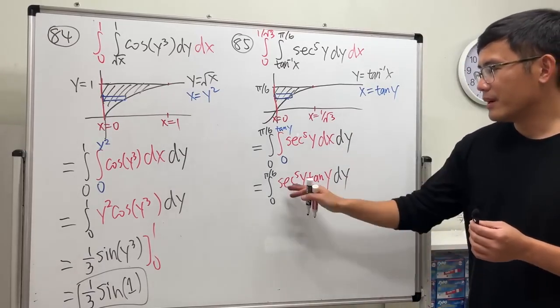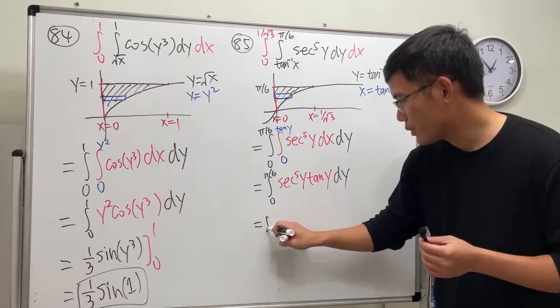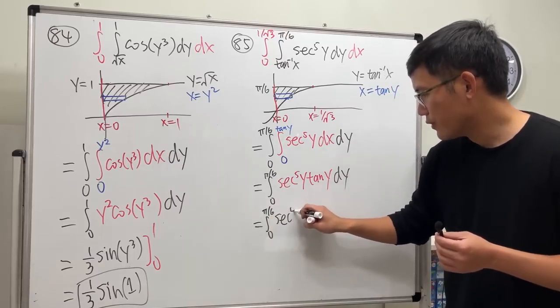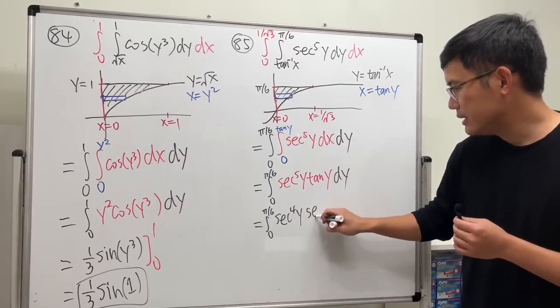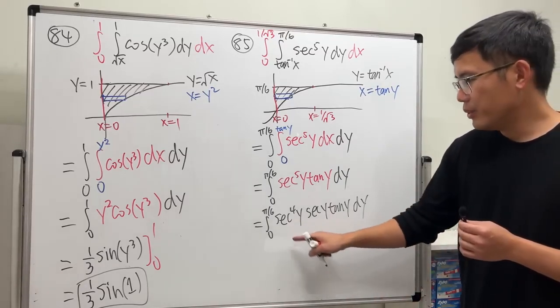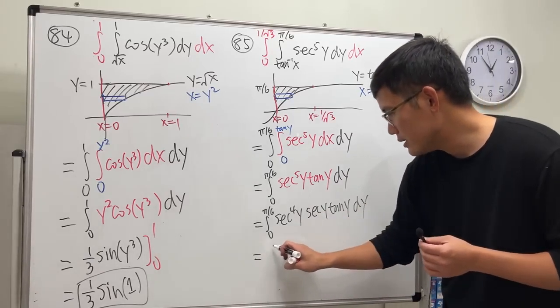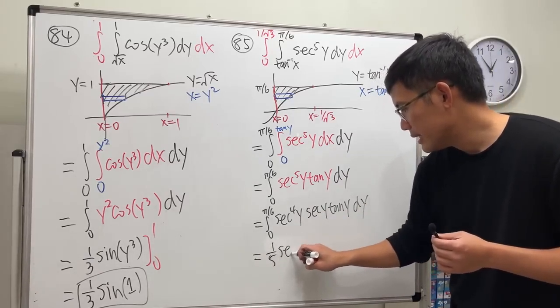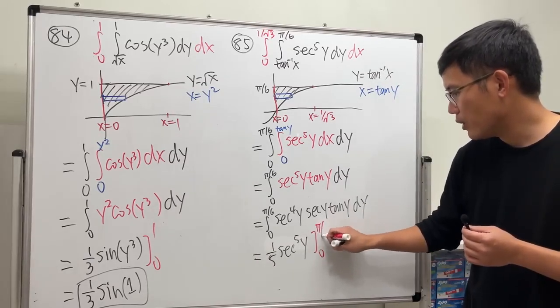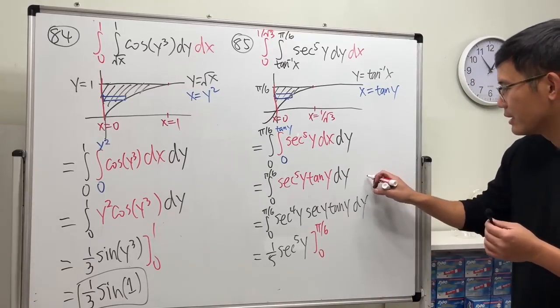How do we deal with this though? Let me tell you, put out a secant. So here, integral going from zero to π over six, secant to the fourth power y, and then let's have secant y tangent y dy. Put u to be secant y. Derivative here is that, so we can see this is one fifth secant to the fifth power y, and we go from zero to π over six.